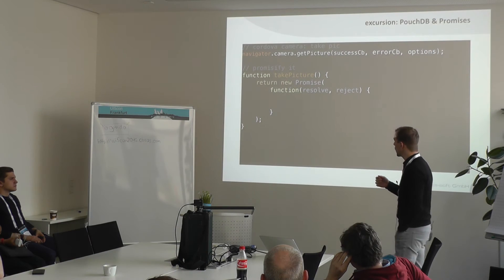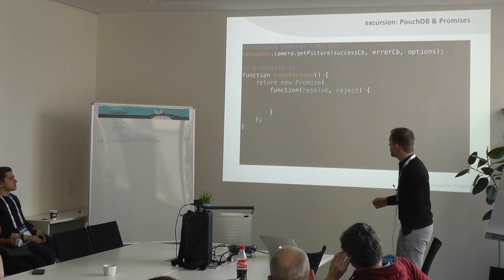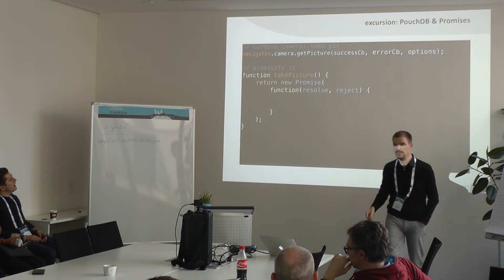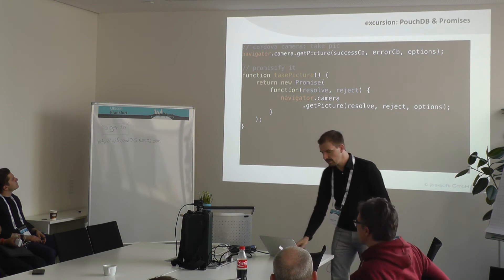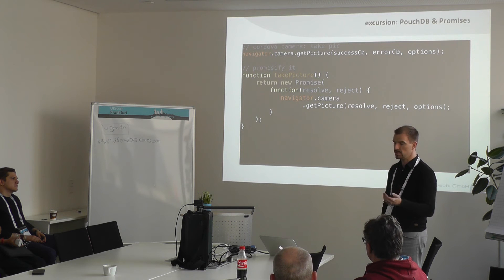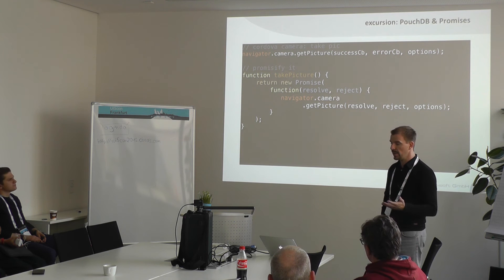Now combine this with the camera API. Most of you know this and might have already used it. You call navigator.camera.getPicture, provide a success callback, error callback, and options for the camera. We're using a promise-based approach, so we want to avoid callback hell — the indentation train. What you do is wrap a callback function inside a promise. The notation with function resolve/reject is shorthand. Inside, you simply put navigator.camera.getPicture. When it worked, resolve it and you'll get the base 64 string back, or reject it and you get the error back. The options are still the same.